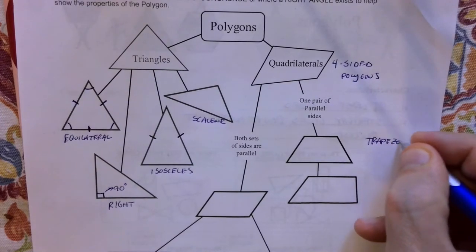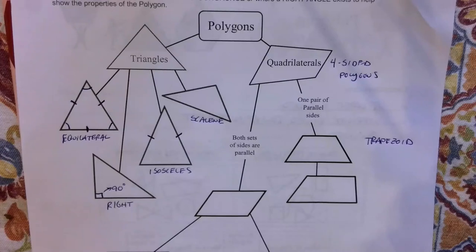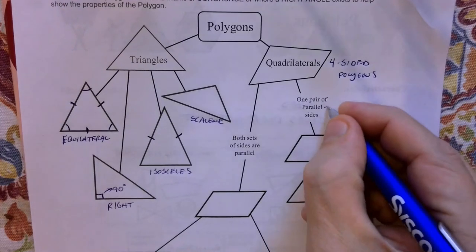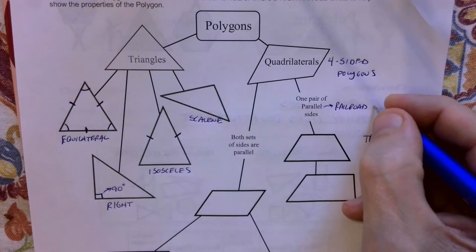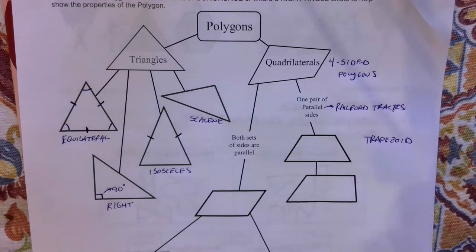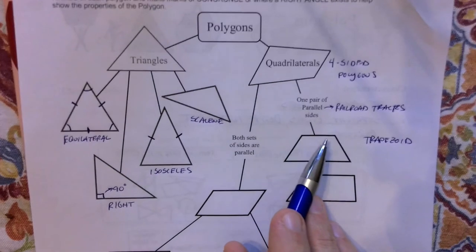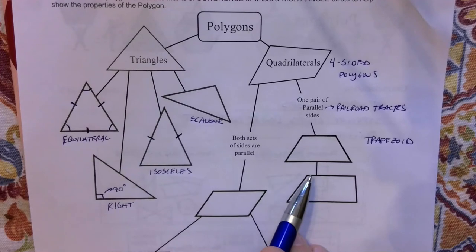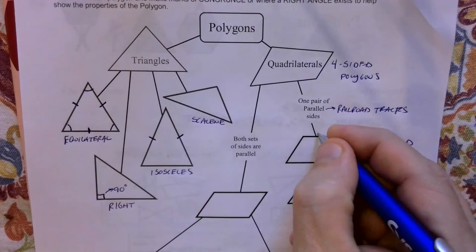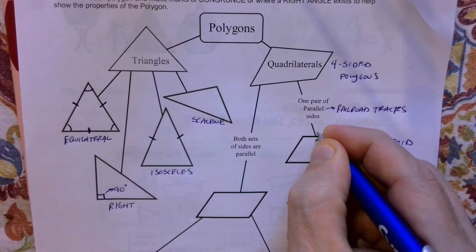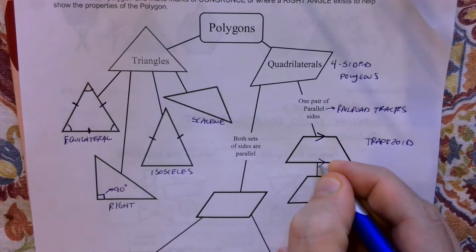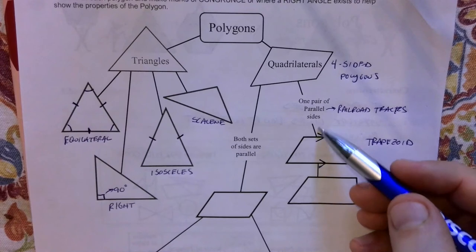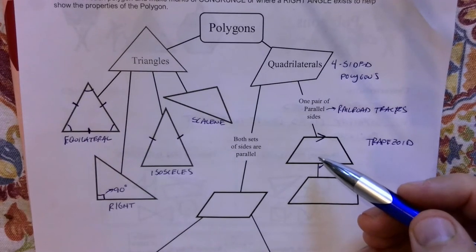Nothing about sides being equal with a trapezoid. We show parallel sides with a symbol — think of railroad tracks, always the same distance apart forever. On a trapezoid, you'll see a little arrow symbol on the two parallel sides. Sometimes they enclose it like a little triangle shape. Either symbol means those two sides are parallel, and the trapezoid has only one pair of parallel sides.